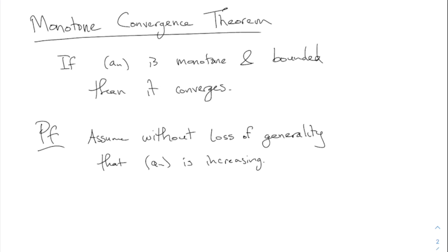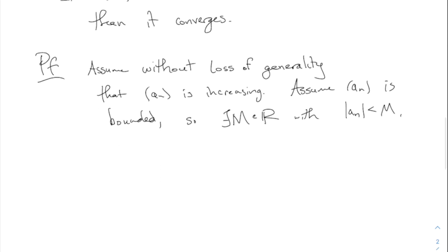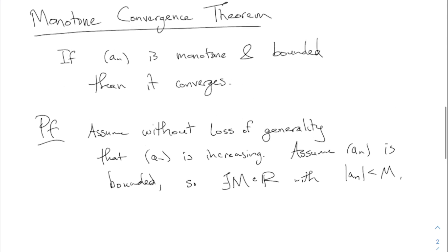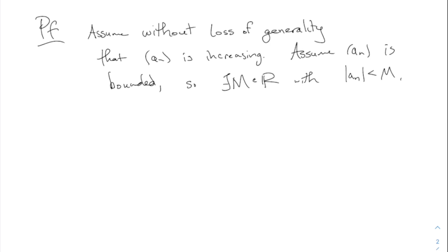We assume it's increasing, and also assume it's bounded — there is some big M, a real number, with |a_n| < M for all n. Now I have to explain why it converges. What's tricky is we don't know what it converges to. To use epsilons, we need to show |a_n - a| < ε, but we don't even know what a is. So we have to think about what does it converge to.